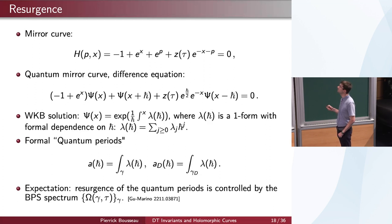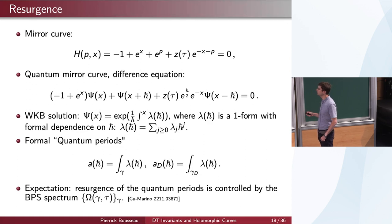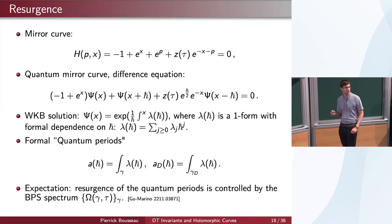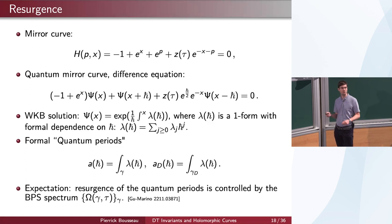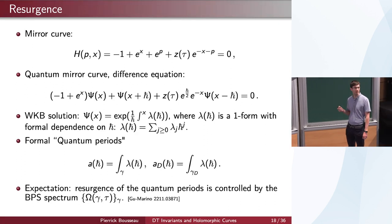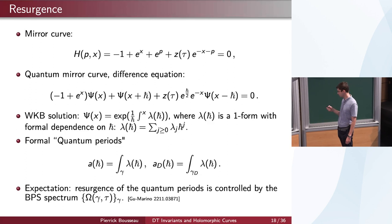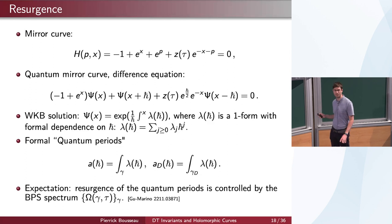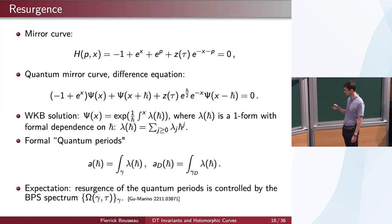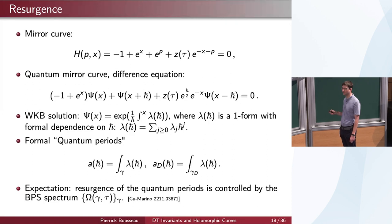Out of this one-form you can cook up so-called quantum periods, which are just periods of these one-forms along a basis of cycles on this elliptic curve. You will get formal power series in ħ. The general expectation — and I guess in Iwaki's talk there were closely related objects — is that the resurgence of these formal power series in ħ should be controlled somehow by the BPS spectrum Ω(γ, τ). If you fix τ, you fix a point and your curve, then you have one resurgence problem, and the claim is that this should be controlled by the BPS invariants Ω(γ, τ) for all possible γ. In particular, the position of the singularities of the Borel transform should be the values of the central charge for γ such that this thing is non-zero. There is some work by Gu and Mariño where they do numerics of the Borel transform of this thing and see some patterns.